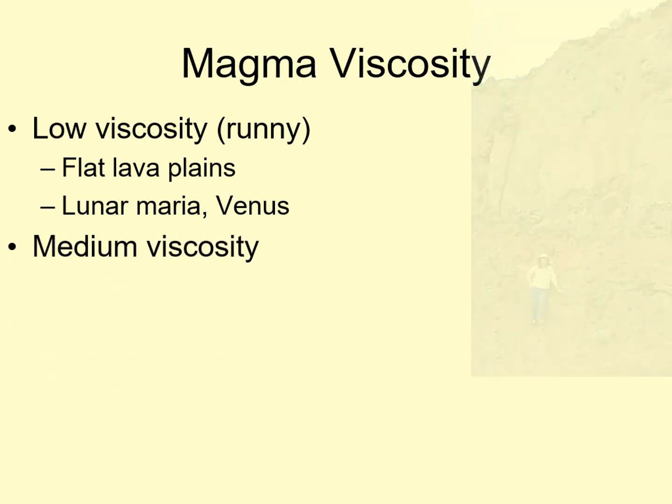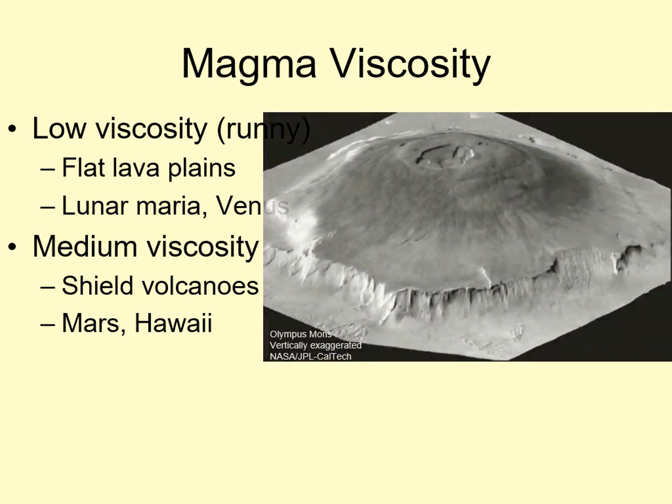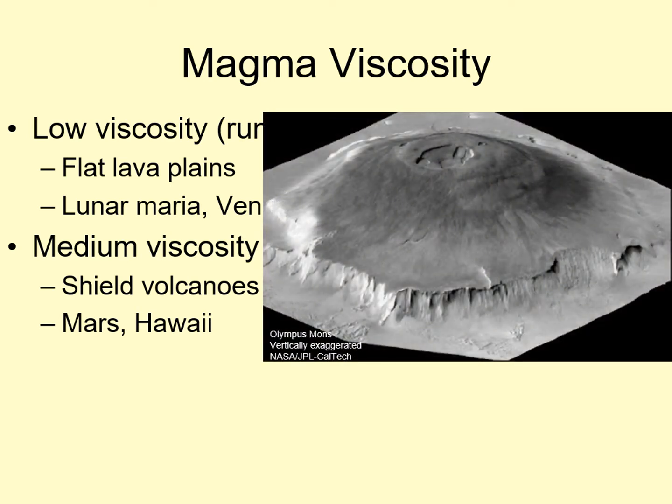For example, the Columbia River Plateau in eastern Washington state is built up from many layers of low viscosity lava. As the viscosity goes up, the magma can't flow as easily, so it starts to build up to form mountains. The characteristic mountain formed from intermediate viscosity magma is called a shield volcano. Shield volcanoes have very gentle slopes, but they can also get to tremendous heights. For example, Olympus Mons on Mars is the largest volcano in the solar system, standing almost 30 kilometers high and covering an area comparable to the largest U.S. state.